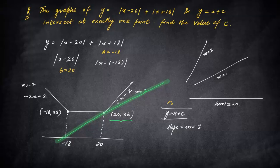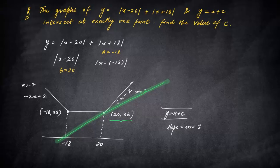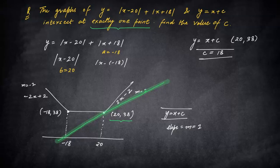So for one, exactly one solution, exactly one point, you have got your answer that y = x + c should pass through the point 20 comma 38, which gives the value of c as 18. That's why c = 18 is basically the right answer.